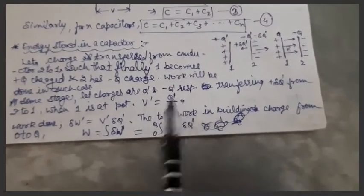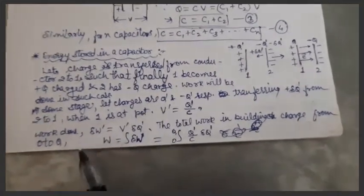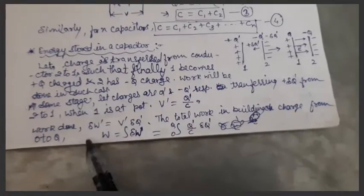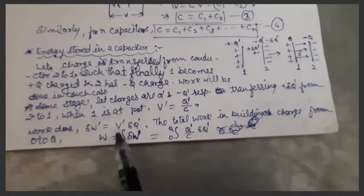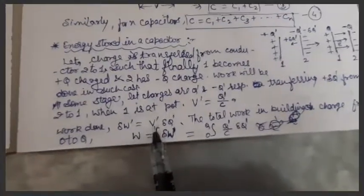That is q dash by c. This is a famous relation regarding a capacitor. In this case, the work done is given by potential into the charge, so Vq. Here potential is V dash and charge is delta q dash, so work done delta W dash equals V dash delta q dash.